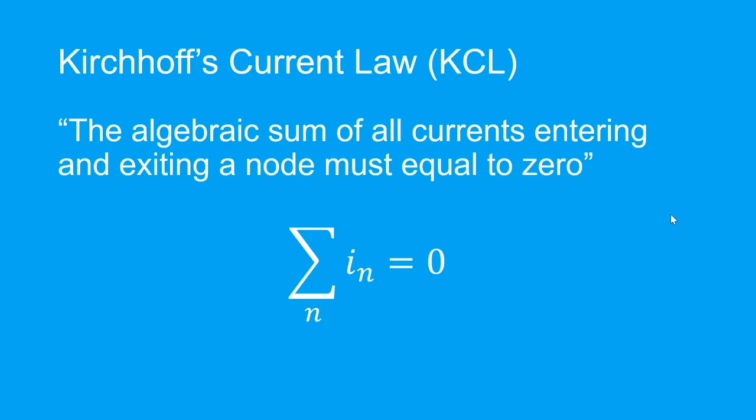What does Kirchhoff's Current Law mean? The implication from this statement is that all currents entering the node is equal to all currents leaving the node. This makes sense because charge is conserved when going through the node, so the sum of all currents entering the node must equal the sum of all currents leaving the node.